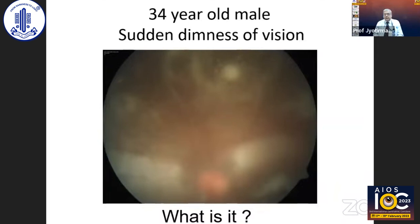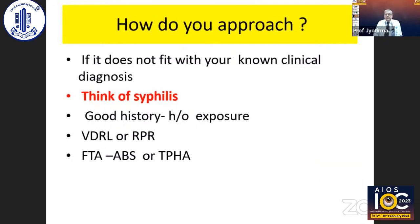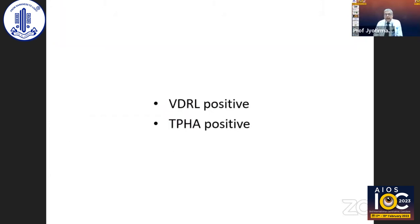This is a case of vitritis with dense exudates and retinal vasculitis in a 34-year-old male with sudden diminished vision. If it doesn't fit a clear clinical diagnosis, one should think of syphilis. Take a good history including history of exposure. Do VDRL or RPR, which is a non-treponemal test, and FTA-ABS and TPHA. In this case, VDRL and TPHA were positive, and the patient responded to treatment.